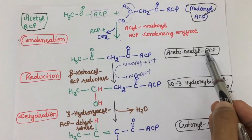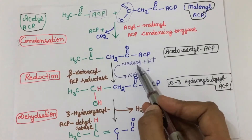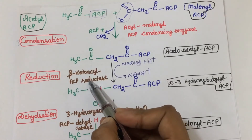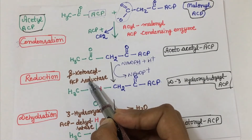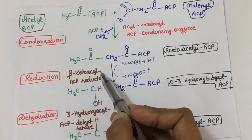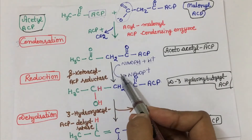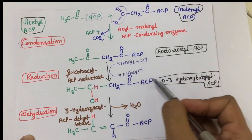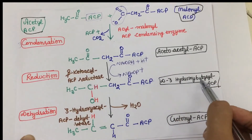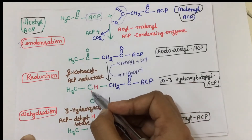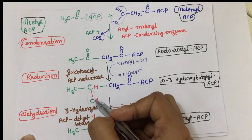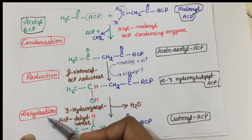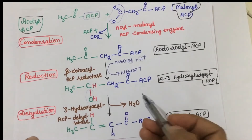The next step is reduction. In this step, acetoacetyl-ACP uses NADPH as a reductant, and the enzyme used is beta-ketoacyl ACP reductase. This enzyme helps in the reduction step, converting acetoacetyl-ACP into D-3-hydroxybutyryl-ACP. The D configuration refers to the right-side orientation.